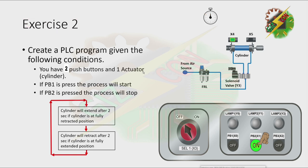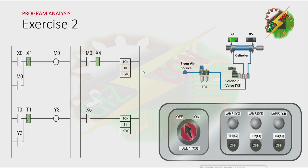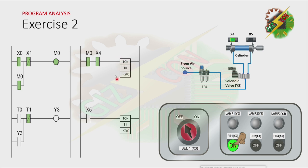Let's continue. This will be my answer to this problem. Let's have our program analysis first. By pressing PB1, M0 will turn on. M0 will not turn off because there is a latching here. And as you can see on this rung, M0 is on and the cylinder is at fully retracted position. That will cause timer T0 to turn on after 2 seconds.